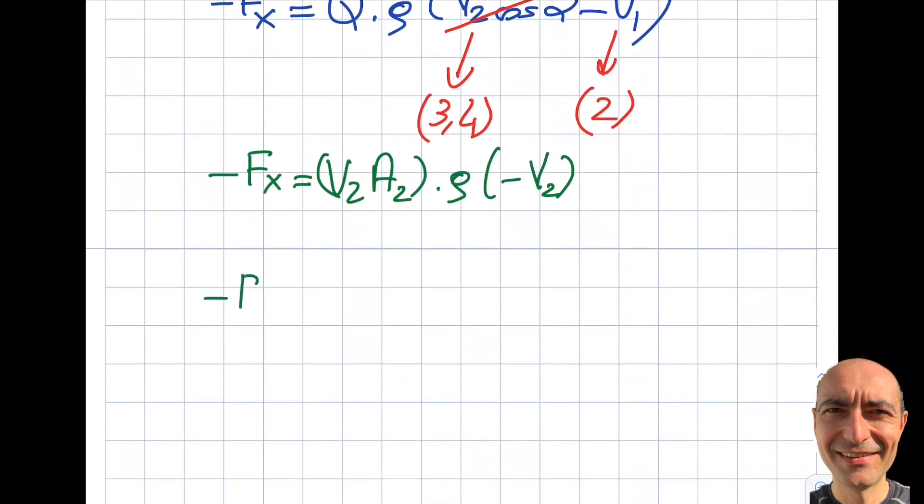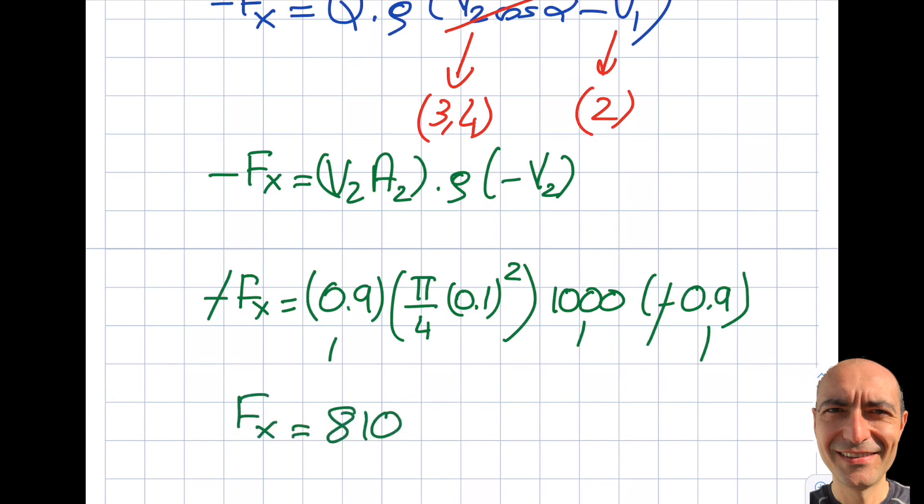Let's square it and plug the numbers in. V2 was 0.9, A2 was π/4·(0.1)², density was 1000, and then this is minus 0.9. When I multiply these, by the way negatives cancel, I got Fx equals 810 times π/4 times (0.1)². So that's 8.1 times π/4.